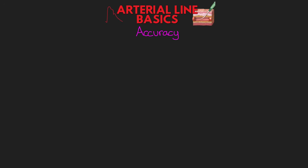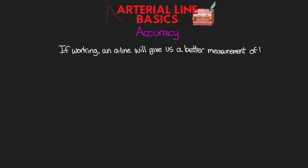An arterial catheter rests in the artery and gives us a direct measurement of the pressure directly inside of the vessel where it sits. Because of this, if everything is working with the A-line, it's going to give us a much better measurement of the patient's blood pressure, especially compared to the non-invasive blood pressure cuff. The question of whether to believe the A-line or the non-invasive cuff comes up time and time again. In almost all situations, if the A-line is functioning properly — which I'll talk about in the next lesson — we want to use that value.